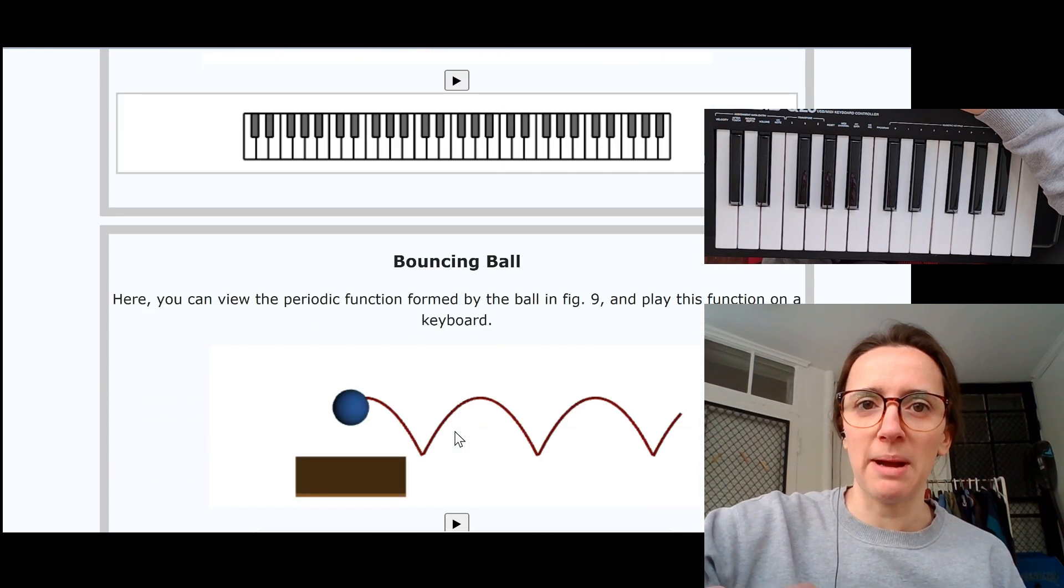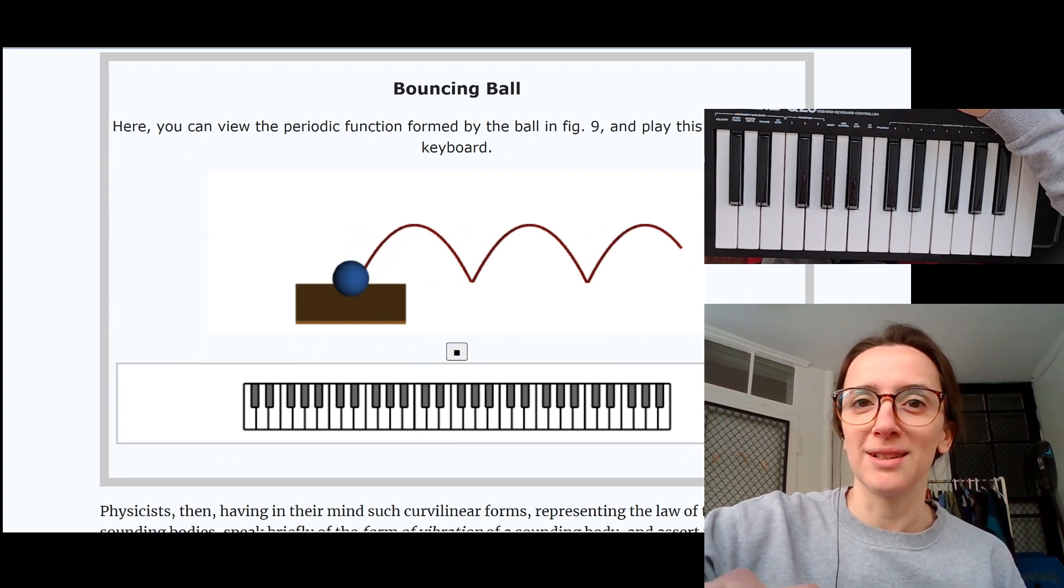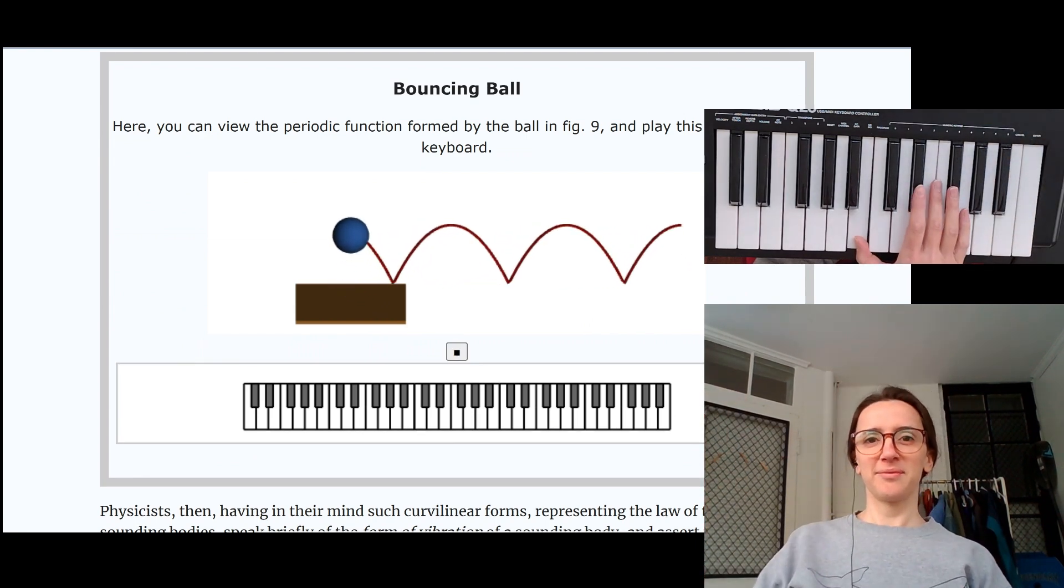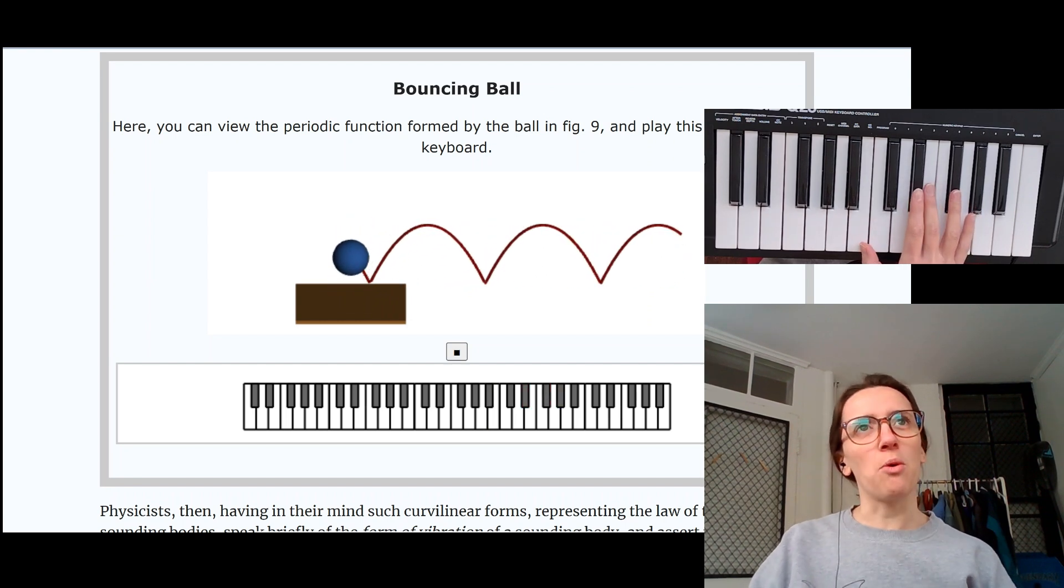This is supposed to most closely resemble the curve of a violin. I can hear how that sounds like. It's a synthesized violin. Let's take a look at the bouncing ball. There's the animation. Let's see how it sounds. That sounds a little more brassy, maybe like a horn.